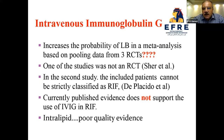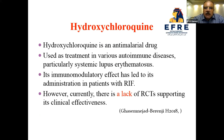Regarding intravenous immunoglobulin (IVIG), it increased the probability of live birth in a meta-analysis pooling data from three supposed randomized controlled trials. However, one study was not actually randomized, and in another the included patients cannot be strictly classified as RIF. Currently published evidence does not support the use of IVIG in RIF patients. The same applies to intralipid, since there is poor-quality evidence for its use.